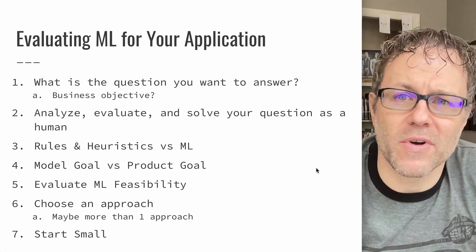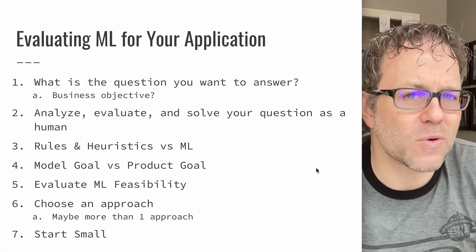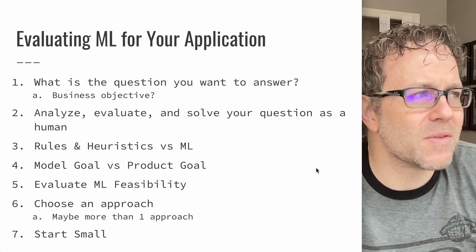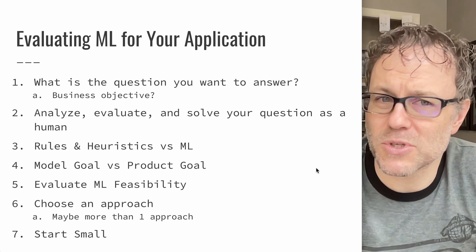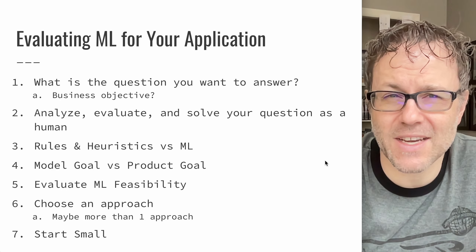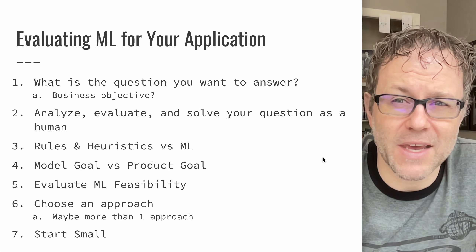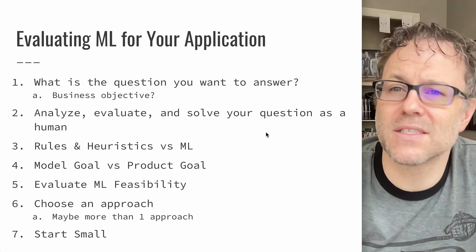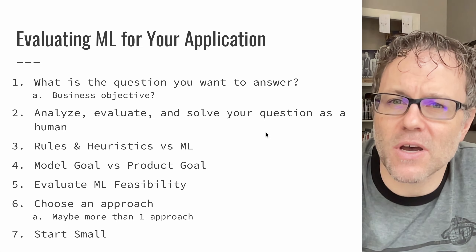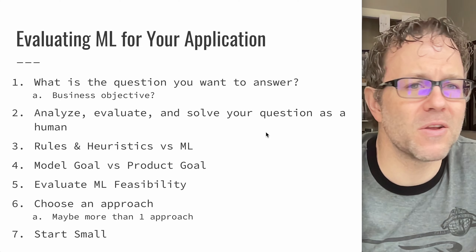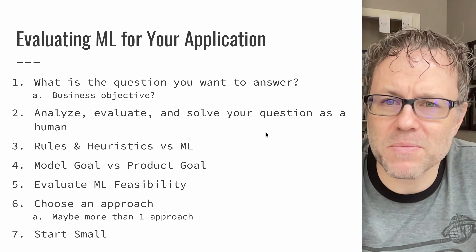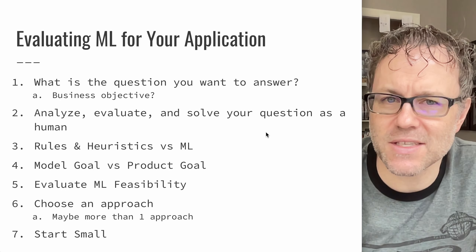If we want to evaluate machine learning for an application, the first thing we should really be thinking about is what's the question we're trying to answer — what is the business objective for our application? Sometimes dwelling on this question may lead you to the conclusion that machine learning is necessary, but it might also lead you to conclude that machine learning is actually not the right approach. A good way to practice this is to look at your problem as a human: how do you solve it? If it's as simple as looking at one or two inputs, this is probably something that rules and heuristics can address, as opposed to a machine learning model.